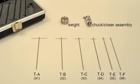Our T-bar spindle set includes six spindles, TA through TF, and a chuck closer weight assembly to attach it to your viscometer.